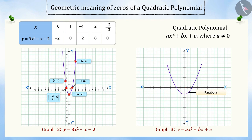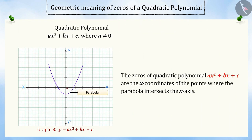With the help of the table, we get to know that 1 and minus 2 by 3 are the two zeros of this polynomial, which are the x-coordinates of the points of intersection with the x-axis for the graph of y equal to 3x squared minus x minus 2. We can say that the zeros of the quadratic polynomial ax squared plus bx plus c are the x-coordinates of the points where the parabola intersects the x-axis.